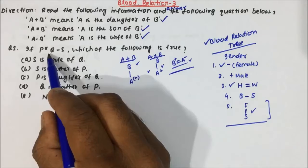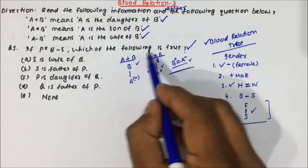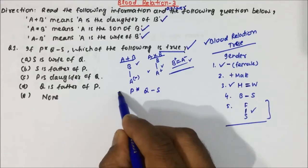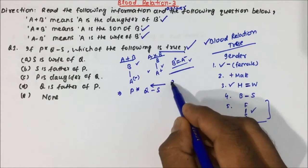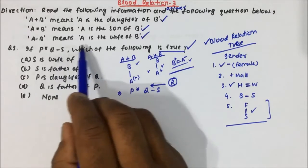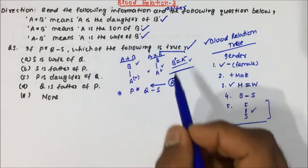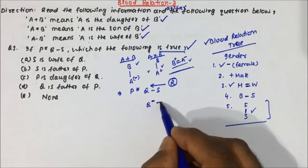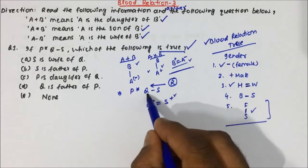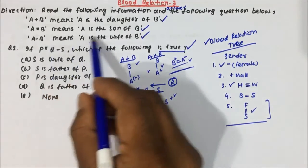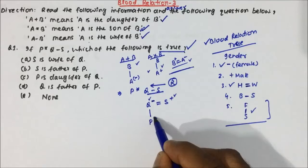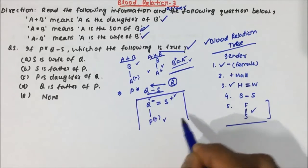Now we come to Question 1: if P star Q minus S, which of the following is true? To solve this, we draw the Blood Relation tree for P star Q minus S, starting from the right end. Q minus S means Q is wife of S — wife means female, and S is the husband so S is male. Next, P star Q means P is son of Q — son means male. So we build this Blood Relation tree.